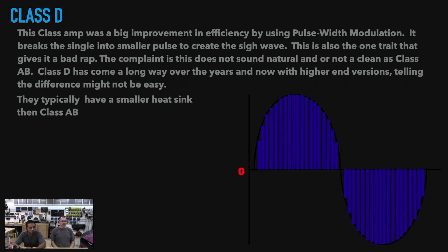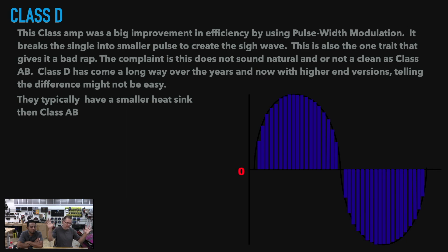In our world, the next thing is Class D. This class of amp was a big improvement in efficiency by using pulse width modulation. It breaks the signal into smaller pulses to create the sine wave, and that's what this diagram is showing. This is also the one trait that gives it a bad rap — the complaint is that this does not sound natural or as clean as Class AB. Class D has come a long way over the years, and now with higher switching frequencies, telling the difference might not be easy. They typically have a smaller heat sink than Class AB.